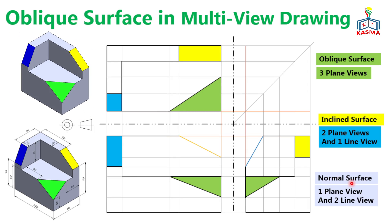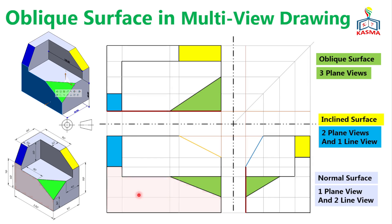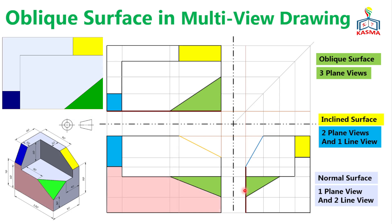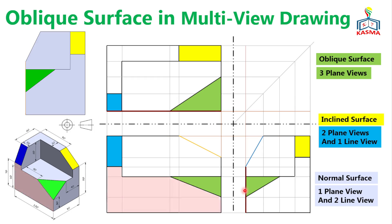Normal surfaces have one plane view showing the true shape and size, and two edge/line views on the other two views. All surfaces other than the inclined and oblique ones are normal surfaces — they show a surface layout on one view and edge views on the other two. For example, the first surface is normal: it shows a full surface layout on the front view but only edge views on the top and side views.